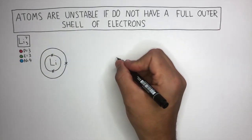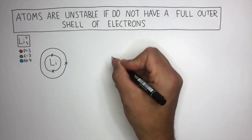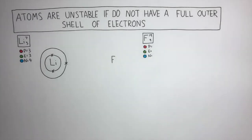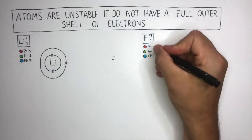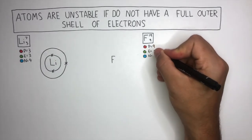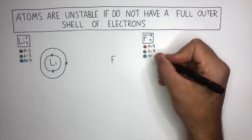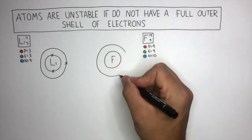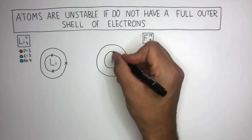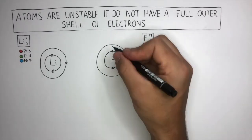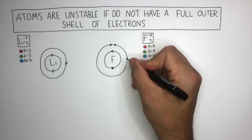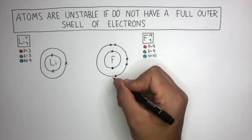Now let's look at the atomic structure of fluorine. Fluorine has a mass number of 19 and an atomic number of 9, so fluorine has 9 protons, 9 electrons, and 10 neutrons. There are 2 shells, where 2 electrons go on the first shell and 7 electrons go on the second shell.